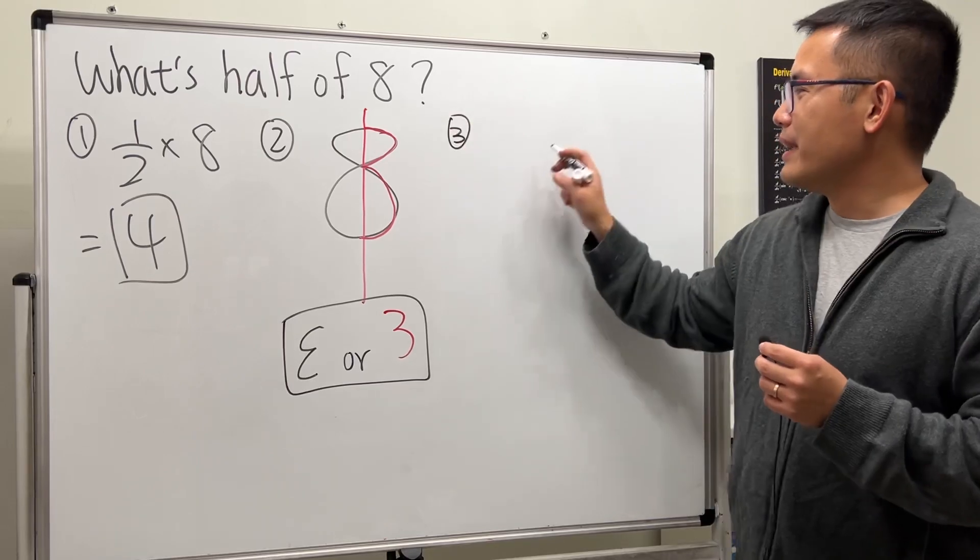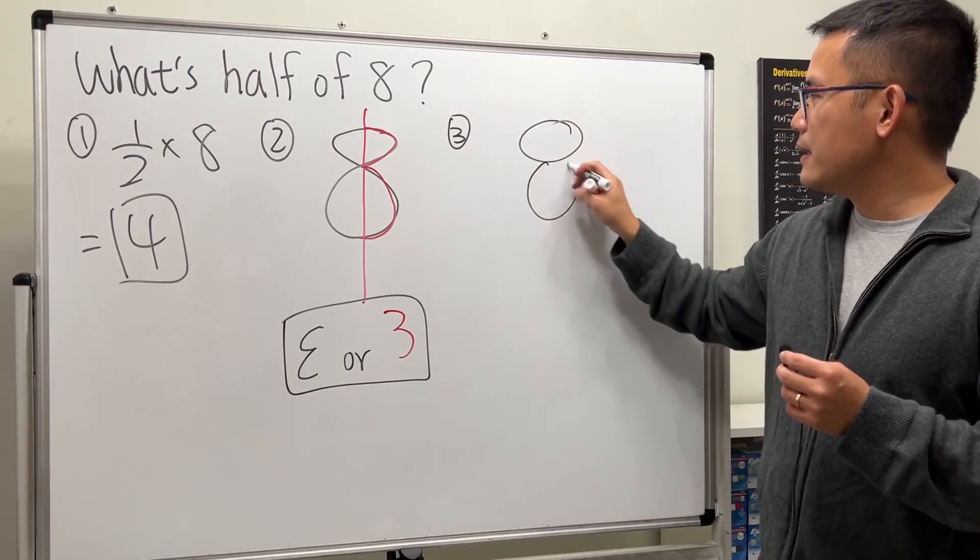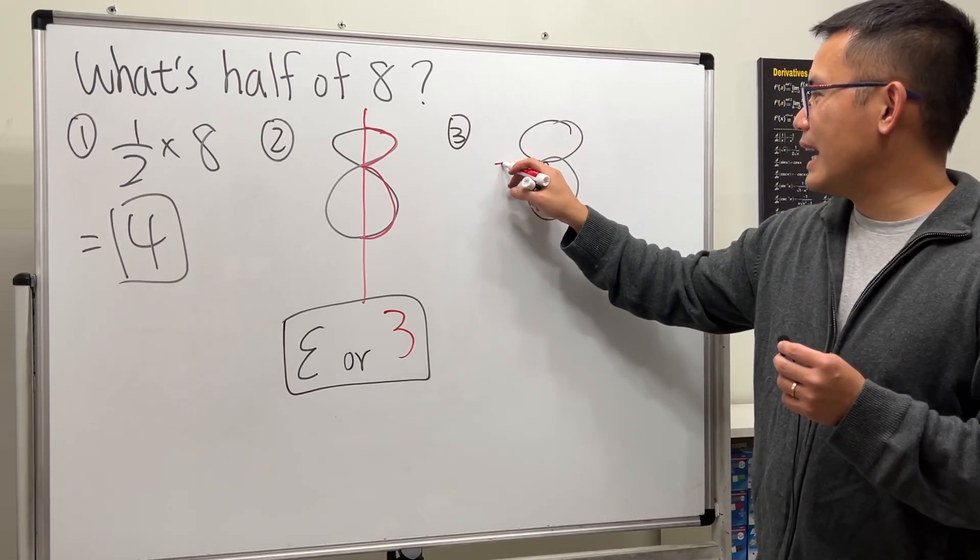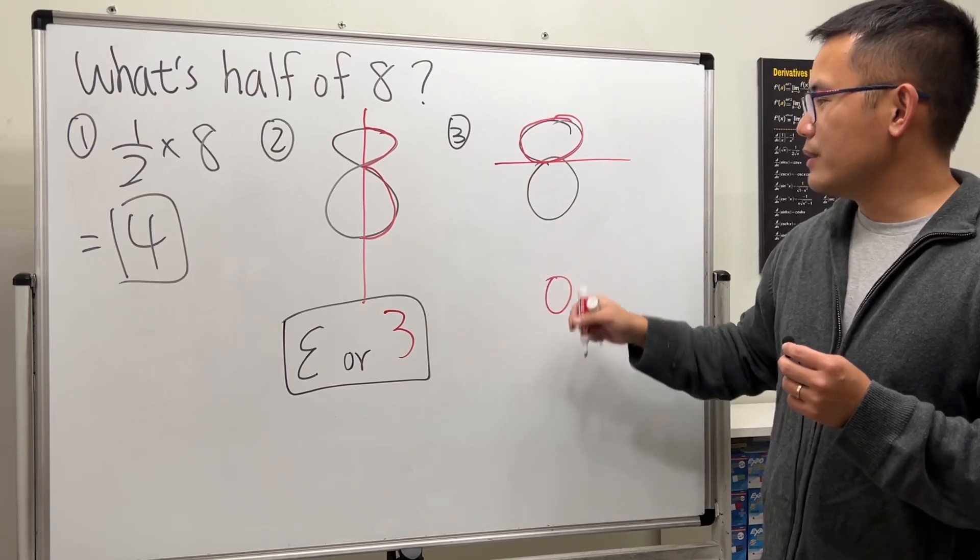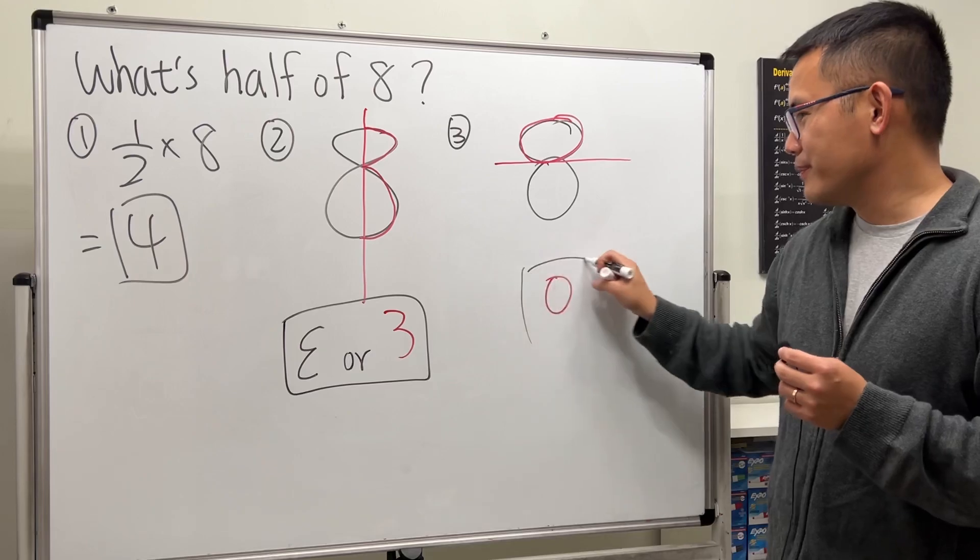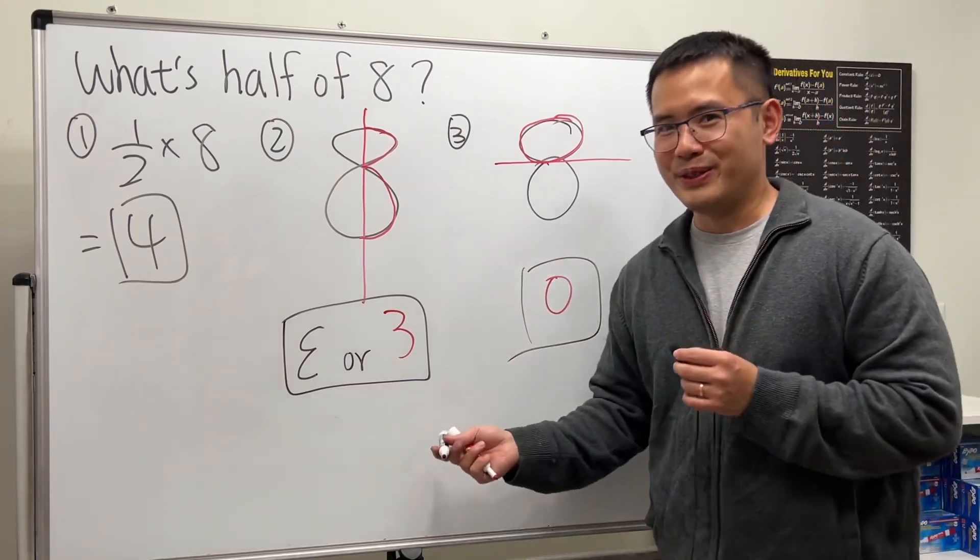And now, number 3, here is 8. Alright, if you cut it half, like this, and take the upper half, you get 0. The bottom one is also 0, so 3 answers, which one do you like the most?